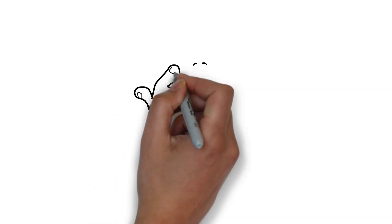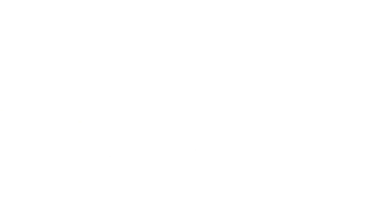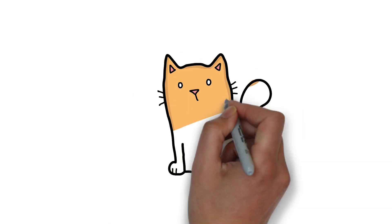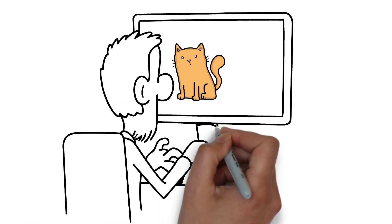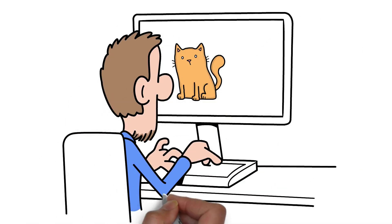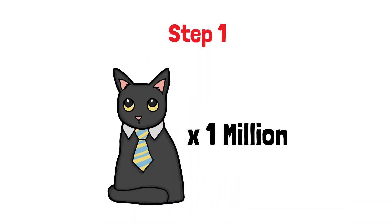Let me show you how powerful this is with a real example that will blow your mind. Imagine you want to teach a computer to recognize cats. The old way? You'd have to write millions of lines of code describing every possible cat feature. But with AI, watch how the magic happens. Step 1: Show the AI 1 million cat photos.